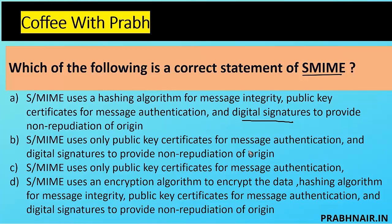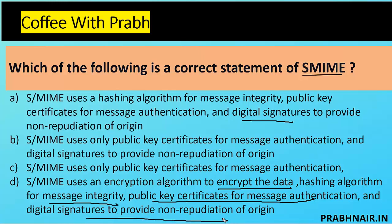Option B: S/MIME uses public key certificate for message authentication and digital signature to provide non-repudiation of origin — but message integrity is missing, so option B is eliminated. Option C: S/MIME uses only public key certificate for message authentication — which is wrong. Option D says S/MIME uses an encryption algorithm to encrypt the data — true — hashing algorithm for message integrity — true — public key certificate for message authentication — true — and digital signature to provide non-repudiation of origin — also true.